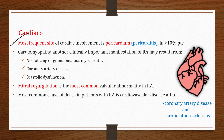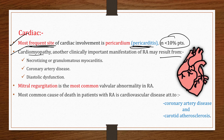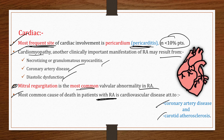Regarding cardiac manifestations, the most frequent site of cardiac involvement in RA is the pericardium — pericarditis occurs in less than 10% of patients. Cardiomyopathy may result from necrotizing or granulomatous myocarditis, coronary artery disease, and diastolic dysfunction. Mitral regurgitation is the most common valvular abnormality in RA. Importantly, cardiovascular disease — attributed to coronary artery disease and carotid atherosclerosis — is the most common cause of death in RA patients.